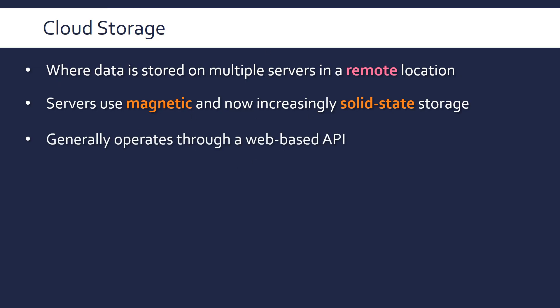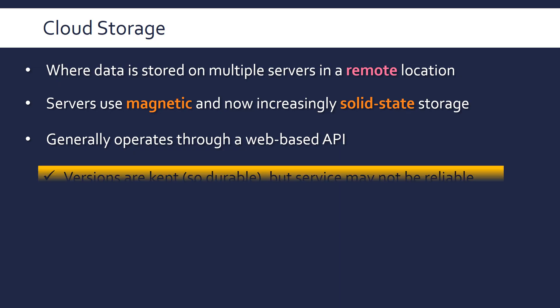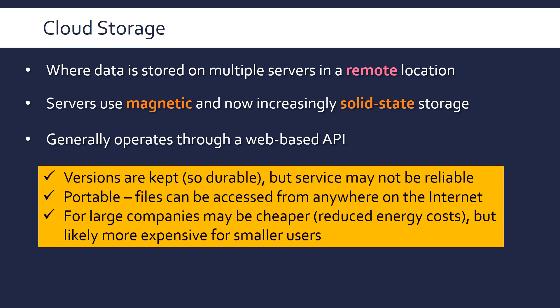You access cloud storage through the internet, typically through a web-based API — application programming interface — which is just a way to access your data online, or through an app. These are just suggested evaluation points, as are the ones shown for the other storage types.